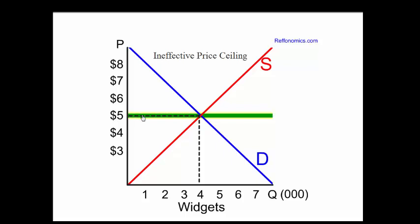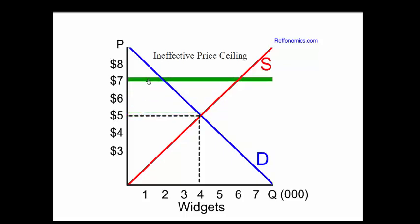If a price ceiling is set above the equilibrium price, it is considered to be an ineffective price ceiling, because the market price, which is lower than the ceiling price, will be the price that's charged. Five dollars will be charged in the marketplace for the product, and the price ceiling of seven then is ineffective.